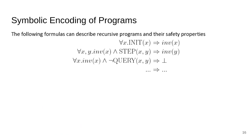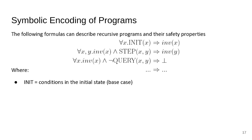Now that we have an encoding for structures, we want to create an encoding for programs. We use systems of constrained horn clauses. This is a canonical example of a CHC system representing a transition system. The first line describes what holds in the initial condition — in our case the base case of an induction.